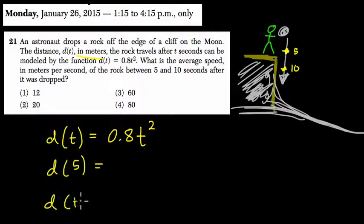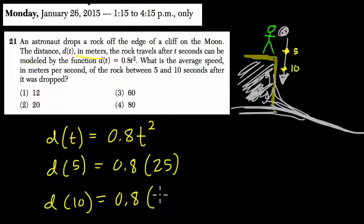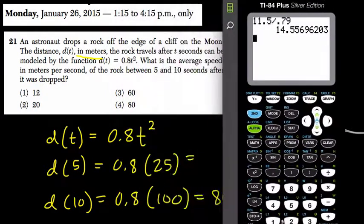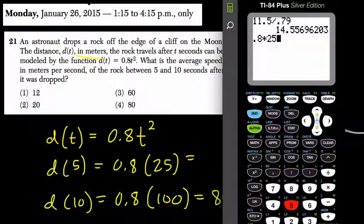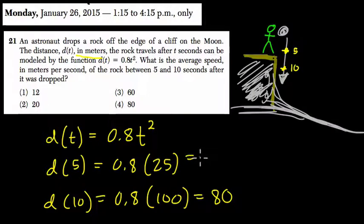So d(5), d(10), what's going on here and here? We have 0.8 times 25, because 5 is t and t is being squared, and then 0.8 times 100. Now 0.8 times 100 is just 80, our decimals over twice. And 0.8 times 25, I prefer to pull the calculator up for this one. We have 0.8 times 25, although you could do 8 times 25, which is 200, and then divide by 10, because we're doing 0.8, not 8, and that's 20. Either way, here we know the distance after 5 seconds is 20, so this is 20 meters, and here it's 80 meters.